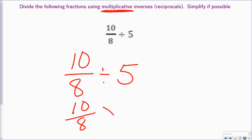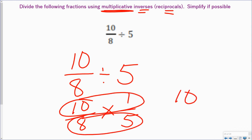Multiplicative means I'm changing that to multiplication. Inversion, inverse or reciprocals means that I'm changing this to 1 fifth. 10 times 1 is 10. 8 times 5 is 40. And both of these are divisible by 10, which gives me 1 here and 4 here. So my final answer is 1 fourth.